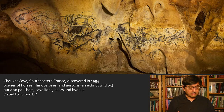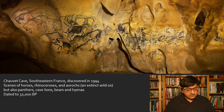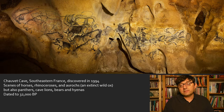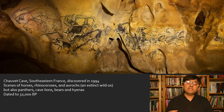Therefore, the spaces in which these images are created become themselves potent, divine, and efficacious. This scene of horses, rhinoceroses, an aurochs — a kind of wild ox that is extinct today — panthers, cave lions, and hyenas are depicted moving across the uneven rock surfaces, sometimes emerging from crevices and nooks of the limestone walls, animating the space with really vibrant movement.